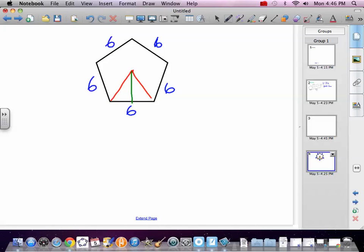So we need to find the area of this triangle that I've outlined in red with a height of green. Well we can work with right triangles, so let's make a right triangle. Let's basically bisect that triangle, that makes this three.